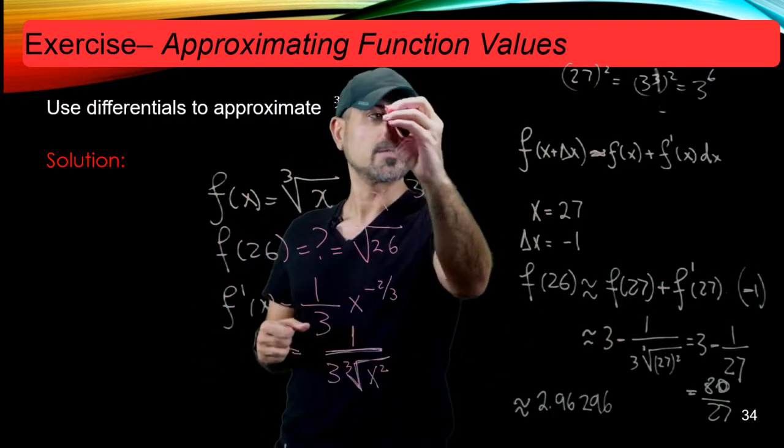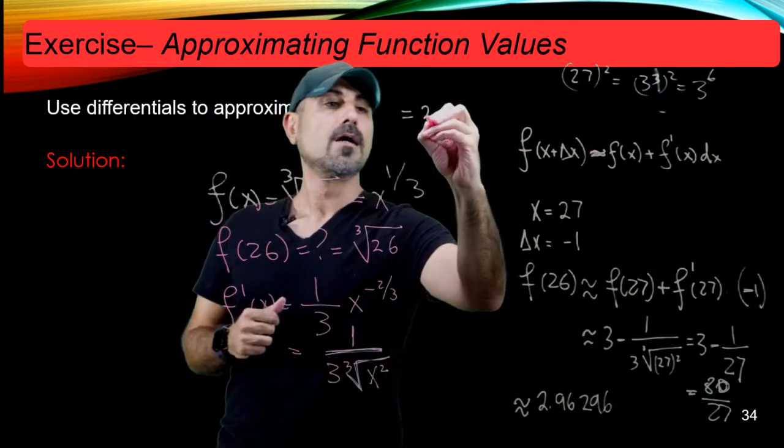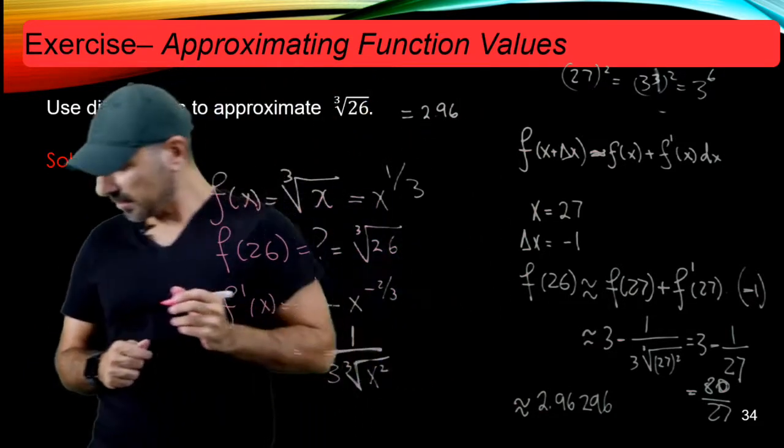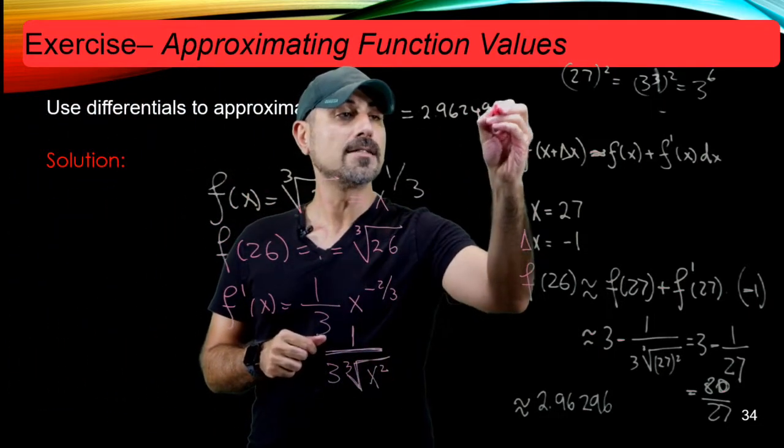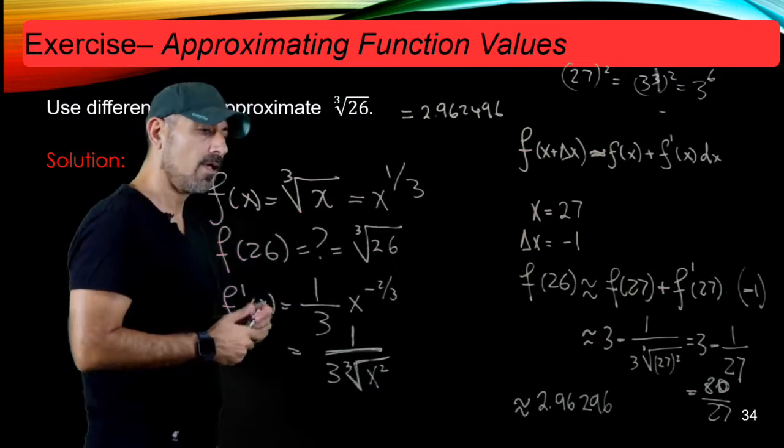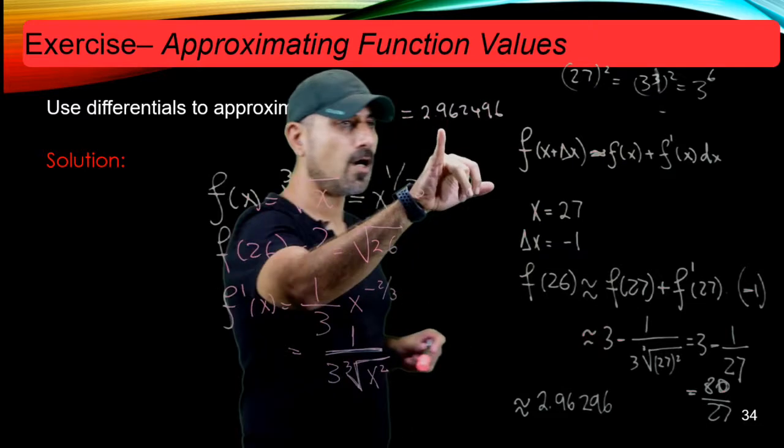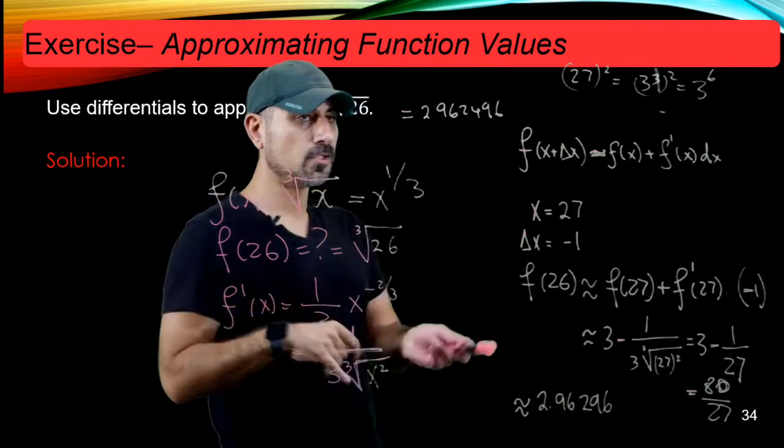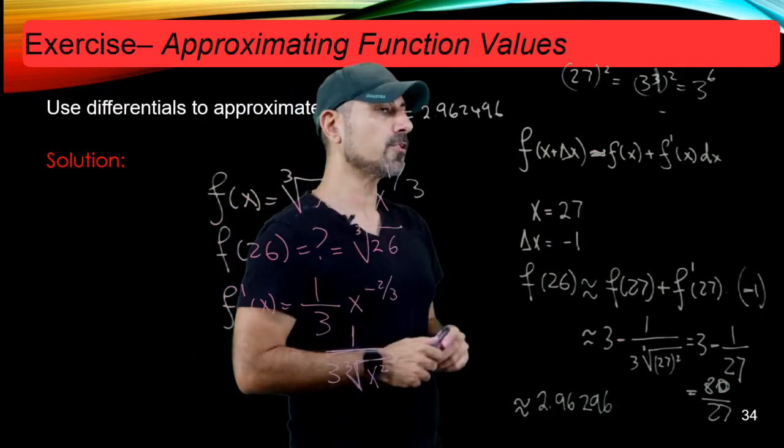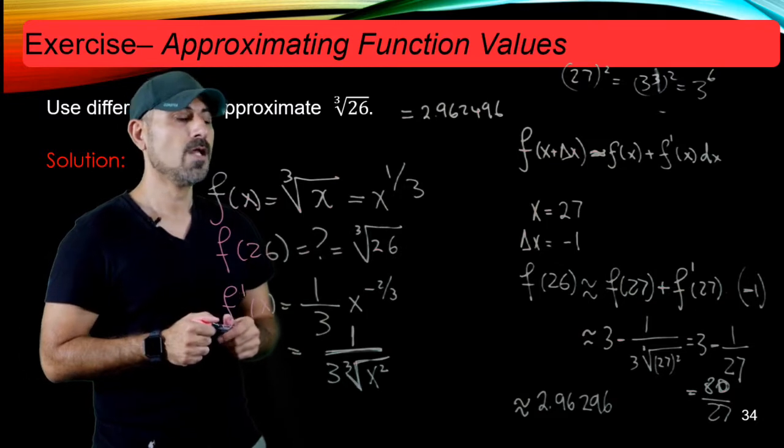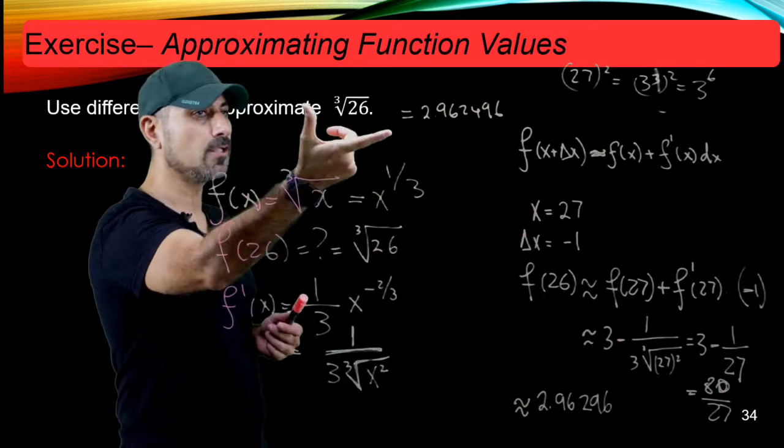If we did use a calculator, this is the calculator value. Let me just tell you what it is: 2.96... I'm going to put as many digits as I can just for you to see the difference: 2.962496. As you see, the calculator value is not too far from the approximate value we obtained by using the differential idea through this equation here. So in other words, this is not a bad approximation of cubic root of 26.